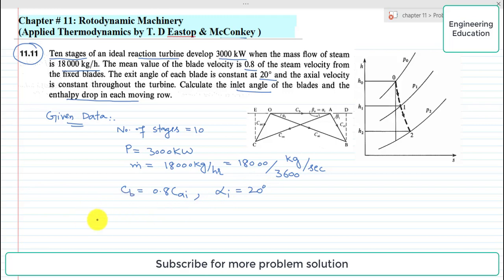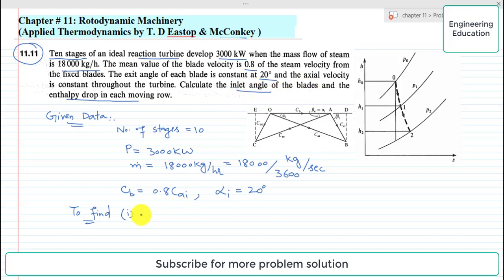We have to find: first, the blade inlet angle beta_i, and second, the enthalpy drop in each moving row.